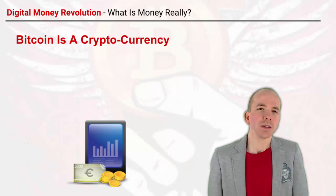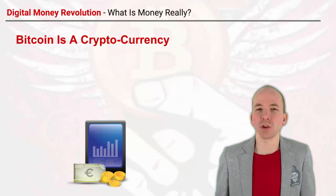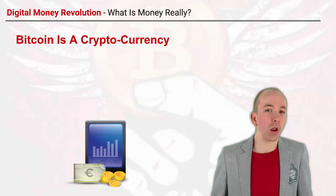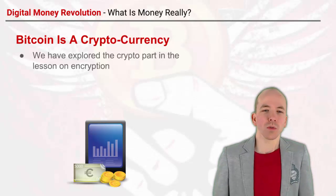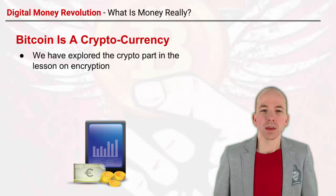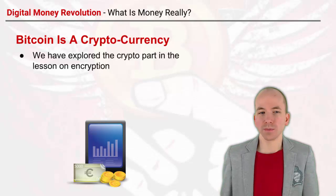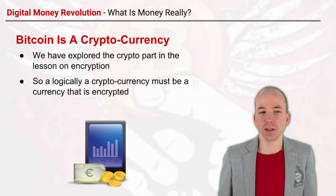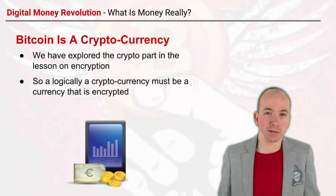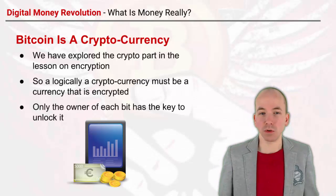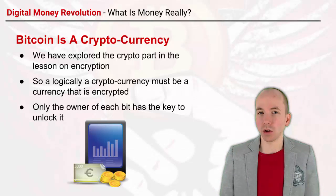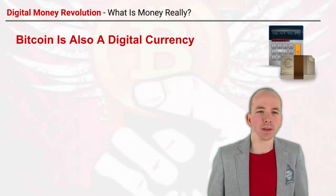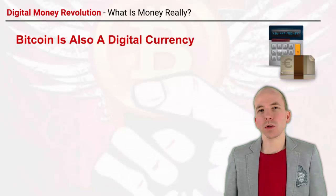We call Bitcoin a cryptocurrency — this is a new sort of phrase that people have started to throw around, and there are now a lot of different cryptocurrencies. We've explored the fact that the crypto part is the cryptography, which we covered in the lesson on encryption. So logically a cryptocurrency must be a currency that's encrypted, and only the owner of each bit of currency has the key to unlock it. When we get to Bitcoin wallets we're going to look at that more closely.